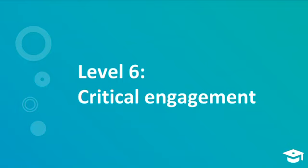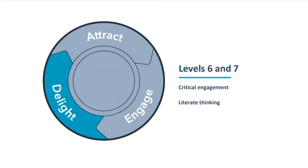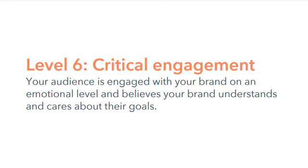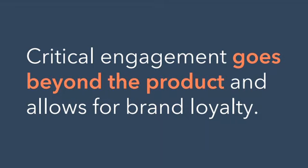Level six: critical engagement. Now we're getting into the top two levels of the seventh level engagement framework — critical engagement and literate thinking. Remember, these two levels are about delighting your customers, which means focusing on customer attention and customer loyalty. This is where you help your audience transition from simply fans and customers to active brand advocates. Critical engagement means your audience is engaged with you on an emotional level and believes your brand understands and cares about their goals. This goes beyond the product and allows for brand loyalty.